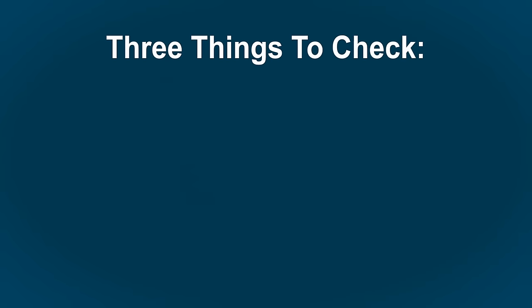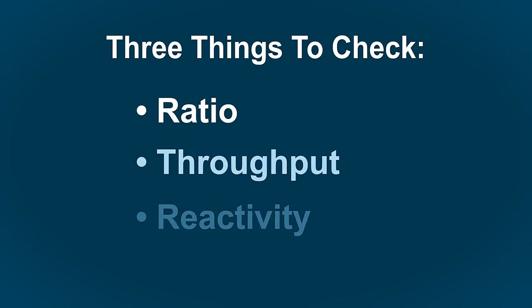The daily QC steps include three basic checks: ratio, throughput, and reactivity.